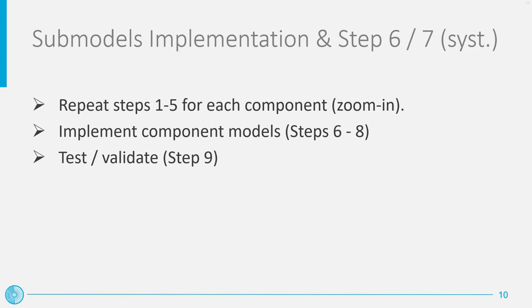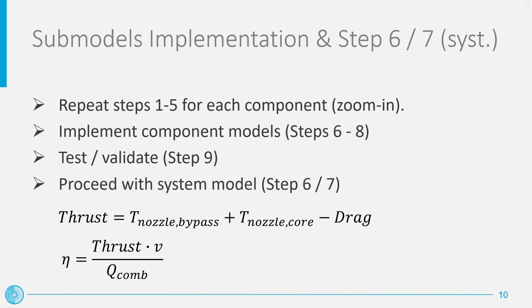Going back to our system model, sometimes there are quantities or variables relevant for the system being modeled that can be calculated only at the system level. For instance, in the turbofan engine model example, this is the case of the net thrust of the engine. To calculate it, we need information from different subcomponents: the thrust delivered by the bypass nozzle, the thrust of the core nozzle, and the drag. Other exemplary quantities that can be calculated only at the system level are the engine efficiency and specific fuel consumption. Regarding possible model simplifications at the system level, this may be required if the computational cost of the system simulation proves too high, and possible simplifications may be introduced at the component level or even at the system level, such as a reduction of the model components.